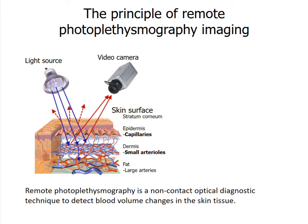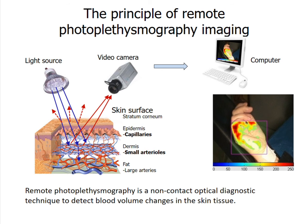Video can then be transferred to a computer, where the software extracts the rPPG signal in every pixel of the video frames. As a result, the two-dimensional distribution of microcirculation parameters can be visualized on the computer screen.